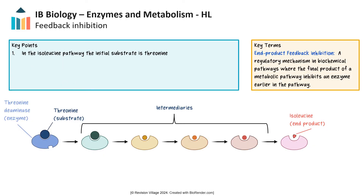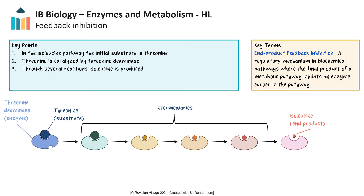Cells regulate metabolic pathways through end product feedback inhibition, where the end product of a pathway acts as an inhibitor to an enzyme earlier in the sequence. For example, in the synthesis of the amino acid isoleucine, isoleucine itself inhibits an enzyme in its production pathway, which prevents excess accumulation. In this linear metabolic pathway, the initial substrate is threonine, which is catalyzed by the enzyme threonine deaminase into an intermediary, and through several intermediary reactions, threonine is changed step-by-step into isoleucine.